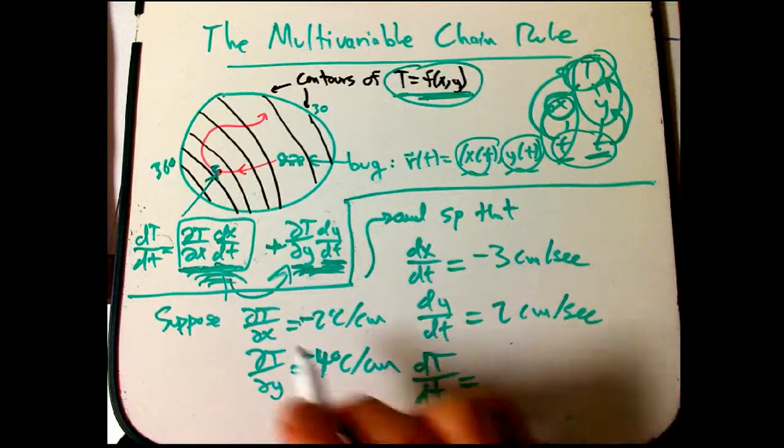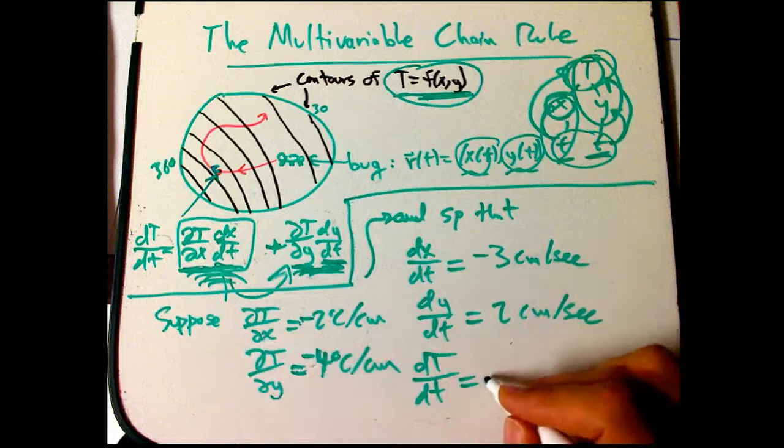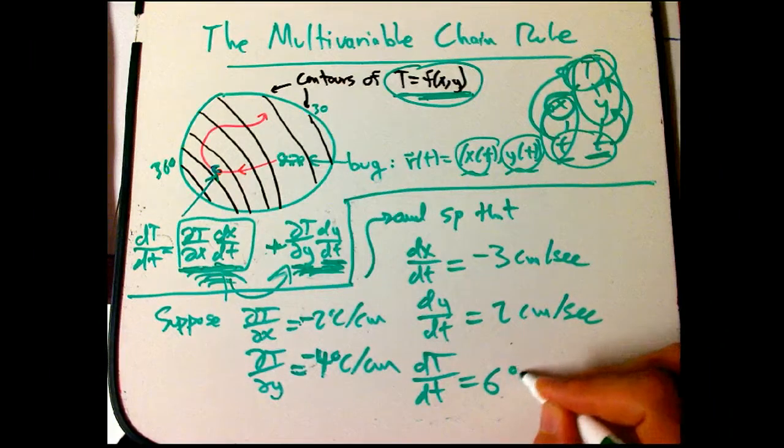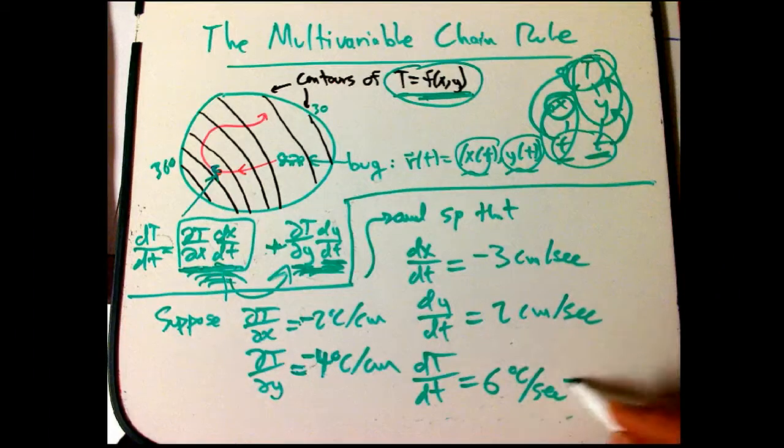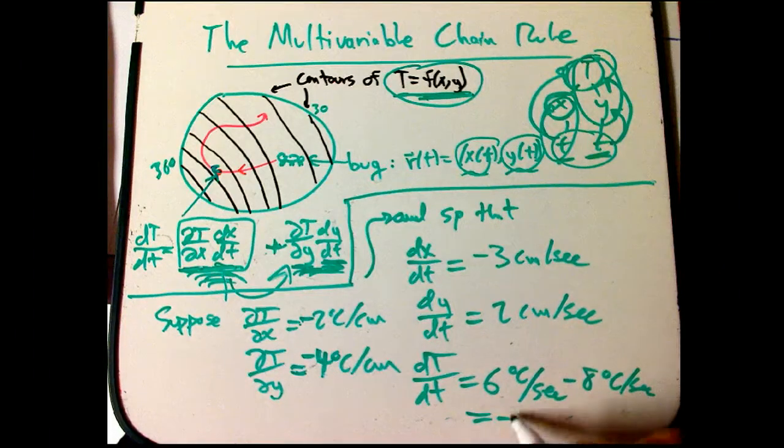It's really easy. It's just this times this. That's going to be plus 6. And notice that the units cancel as they must, degrees Celsius per second. And then minus 8 degrees Celsius per second. And it would be minus 2 degrees Celsius per second.